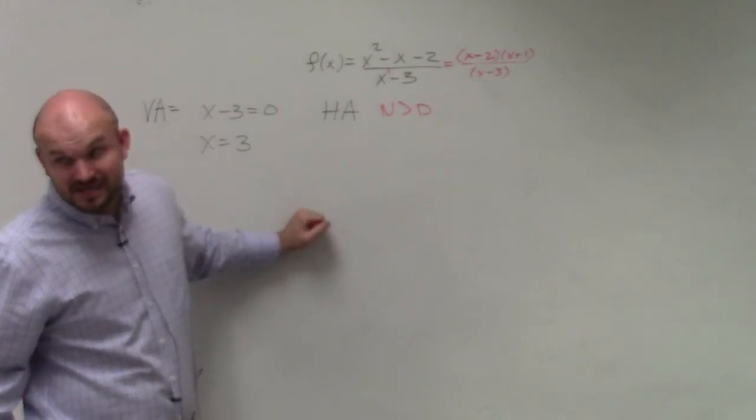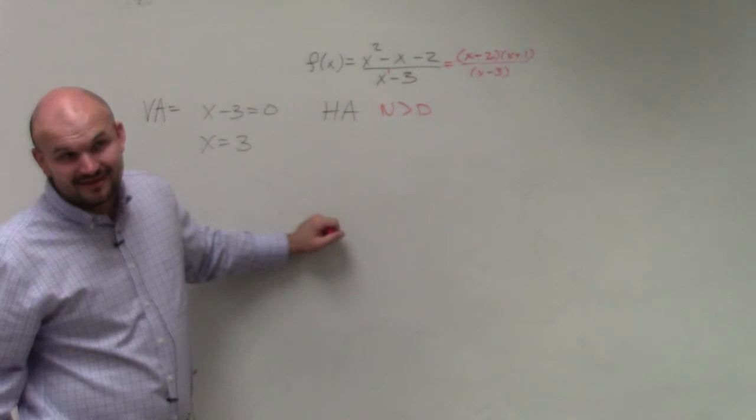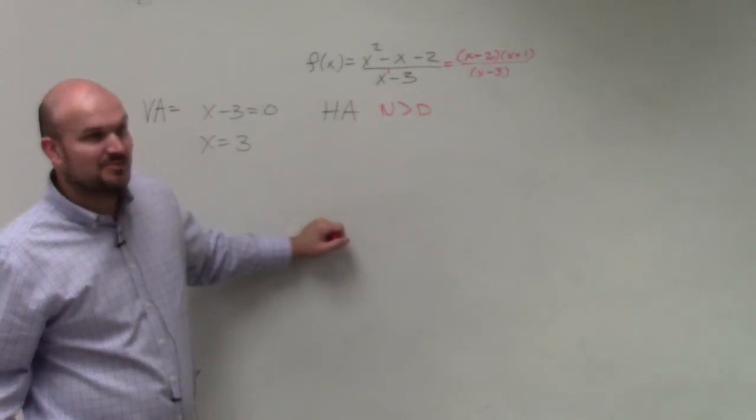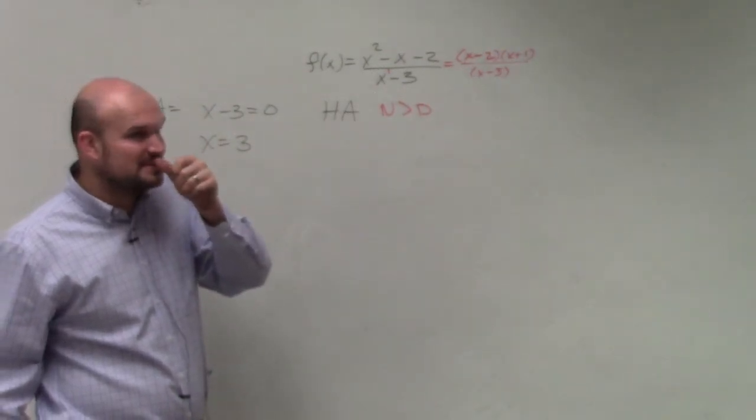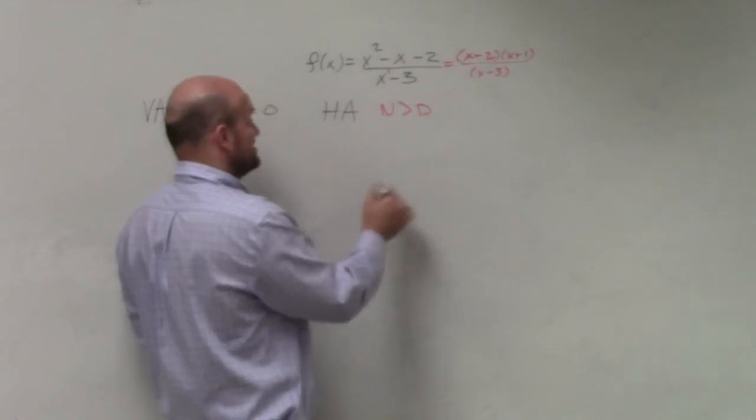So based on your horizontal asymptote test, which we did in the first quarter, do you remember what the horizontal asymptote is when the degree in the numerator is greater than the degree in the denominator? You're going to want to make sure you have that, because it was on your test and it's going to be on this one again.